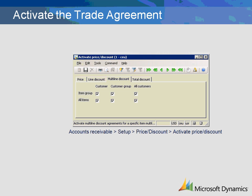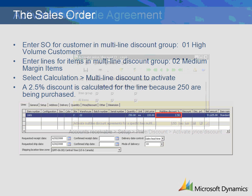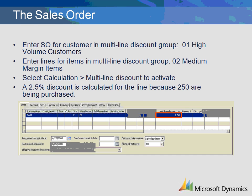When a sales order is entered for customers in Multi-line Discount Group 01, High Volume Customer, and the sales order lines are for items in Multi-line Discount Group, Medium Margin Items, a 2.5% discount is calculated based on the trade agreement that we set up for the High Volume Customer.